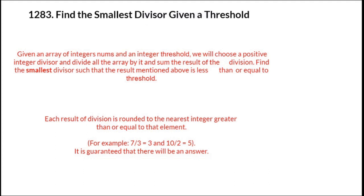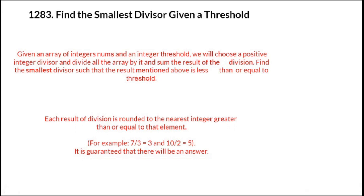We will be discussing a LeetCode problem: find the smallest divisor given a threshold. Given an array of integers nums and an integer threshold, we choose a positive integer divisor, divide all the array elements by it, and the sum of the results should be less than or equal to the threshold. We should find the smallest divisor possible. The division is rounded up to the next greater integer or equal to that number.